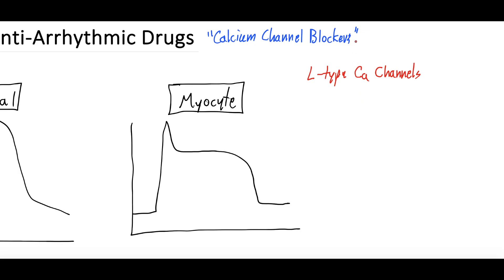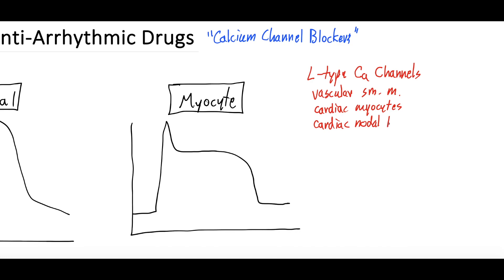What does that mean exactly? Well, these channels can be found on vascular smooth muscle, they can be found on cardiac myocytes, and they can also be found on cardiac nodal tissue. So there are multiple areas in which these calcium channel blockers can work. In terms of their specific mechanism, they regulate the influx of calcium into these cells.